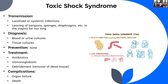Diagnosis is via blood, urine, or tissue cultures to detect Staphylococcus aureus or Streptococcus pyogenes. There is no specific prevention, though warnings appear on feminine care products. Treatment includes antibiotics, sometimes immunoglobulin, and debridement — cutting away of dead tissue — to prevent spread. If left untreated, organ failure and death are common outcomes, as this is a life-threatening condition.